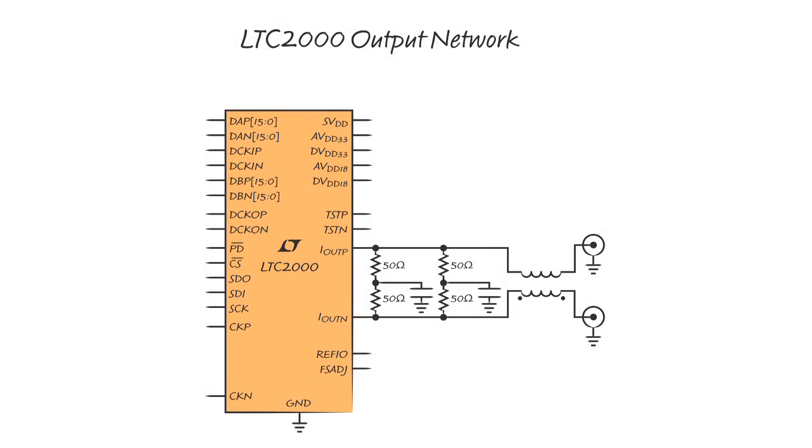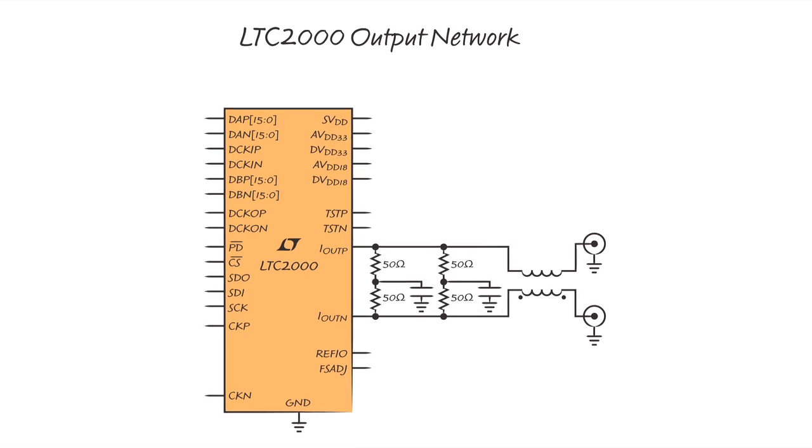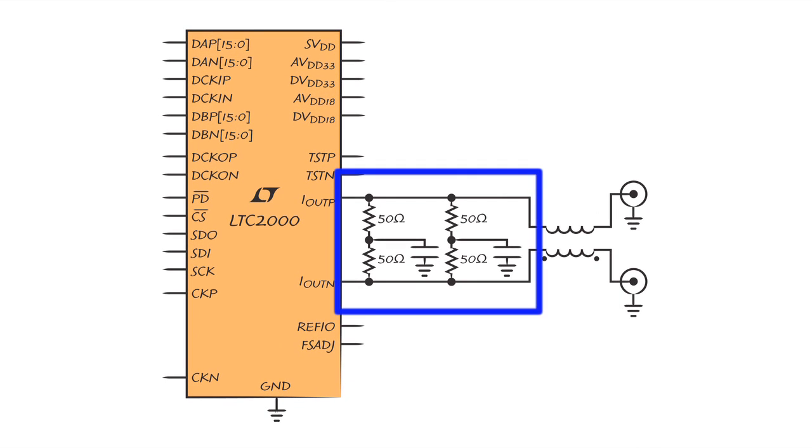The DAC output wants to drive a low impedance, as low as possible in fact. By using external termination resistors in conjunction with the internal 50 ohm impedance, a low impedance is obtainable for best performance.